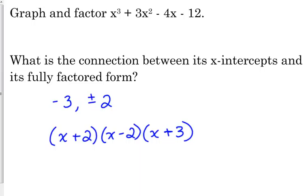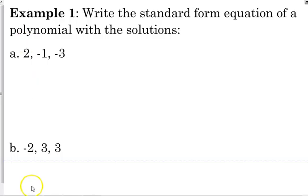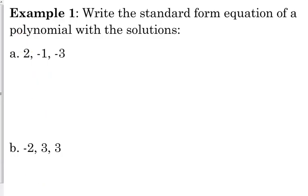It turns out that if we are told what the x intercepts are, what the zeros are, what the solutions are, those words are all kind of synonymous, then we can build the polynomial from that. So let's look at an example here. If we are given these solutions, we need to write the standard form equation of a polynomial with these solutions. So if our solutions are positive 2, negative 1, and negative 3, then when we put them into linear factors, we change the signs.